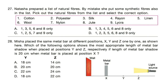Question 27: Natasha prepared a list of natural fibers but by mistake included some synthetic fibers. Pick out the natural fibers from the list: cotton, polyester, silk, rayon, linen, wool, nylon, jute and lycra. Correct answer is option A — the natural fibers are: 1. Cotton, 3. Silk, 5. Linen, 6. Wool, 8. Jute. The others are synthetic.